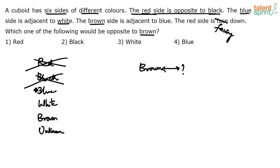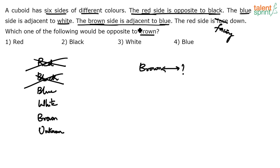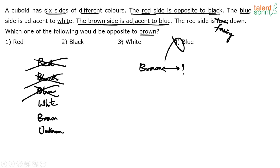The brown side is adjacent to blue. Now, try and understand: if the brown side is adjacent to blue, can brown be opposite to blue? No. Either the sides are adjacent or they're opposite — they cannot be both adjacent and opposite at the same time. So the very statement that the brown side is adjacent to blue tells us that blue cannot be the answer. Blue cannot be opposite to brown. So blue is also ruled out. The red side is facing down — that doesn't really help.